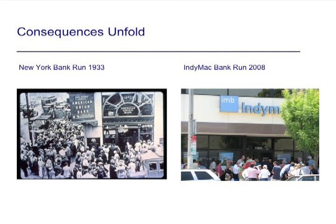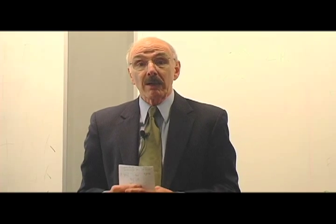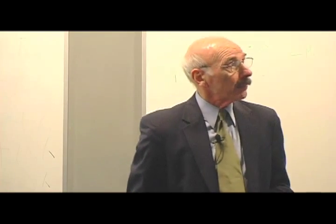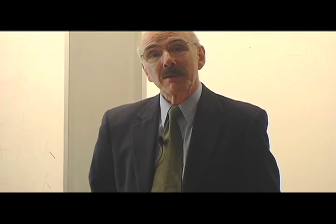Here's a bank run on the left in 1933 in New York, and on the right, a bank run in 2008 at IndyMac, a big subprime mortgage lender. Deficits which we're racking up at very large rates are dominated in their spending component by job losses, because tax receipts plunge very fast when people lose their jobs. If derivative contracts are honored in the bailout of various failing financial institutions, the Lehman example shows that speculators will be handsomely rewarded for contributing to the fall of Lehman via their side bets and short selling — rewarded with taxpayer money. So the question arises: how does subsidizing speculators with taxpayer money benefit the real economy? Thank you very much.